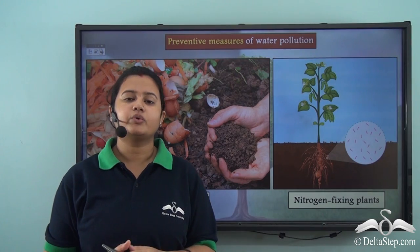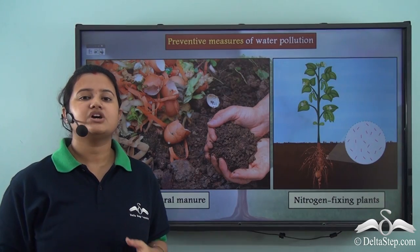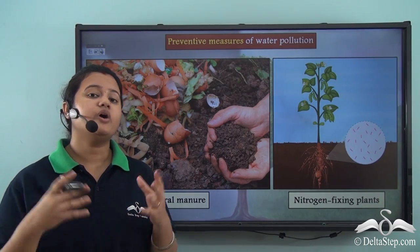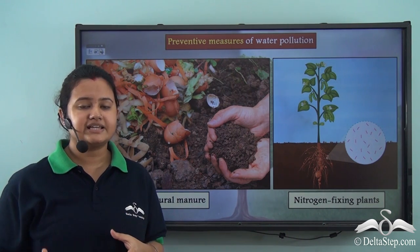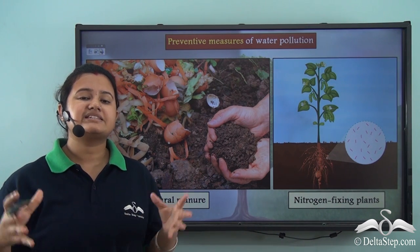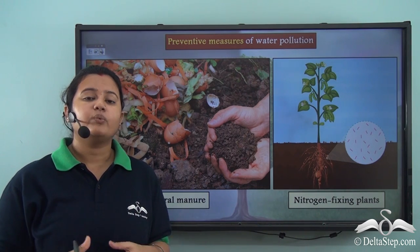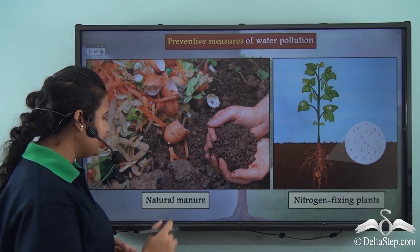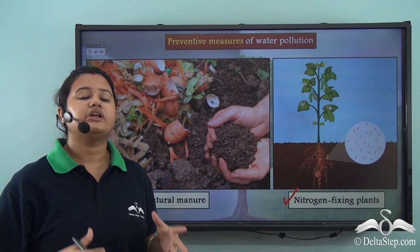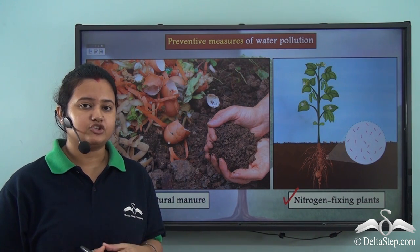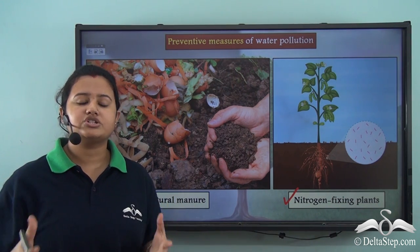Let us now look at other ways to control water pollution. Water pollution can also be caused by agricultural activities like the use of chemical fertilizers, insecticides, and pesticides. These chemical fertilizers must be used at a minimum. Instead, we can use natural fertilizers like natural manure and nitrogen-fixing plants. Natural manure is biodegradable and thus environment-friendly — it does not lead to water pollution.